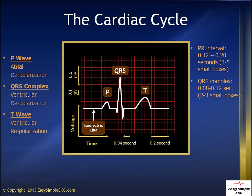The ST segment begins at the end of the QRS complex and ends at the beginning of the T wave. Be careful not to include the T wave in the ST segment, or else it will cause you to judge ST elevation wrong every time. The end of the QRS complex is sometimes called the J point.